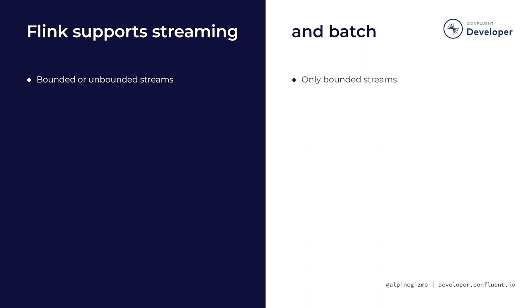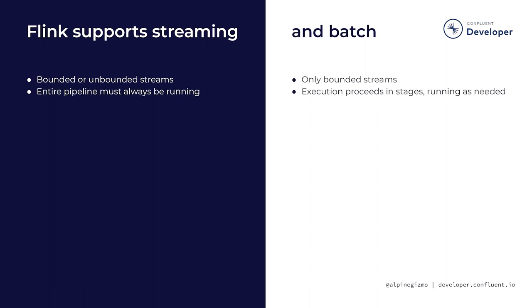The effect of batch mode is to enable a bunch of optimizations. Those optimizations are only possible with bounded streams. Unbounded streams require streaming. We expect a stream processor to produce results quickly, with minimal end-to-end latency for the entire pipeline. For this to work, the entire pipeline must be left running continuously.